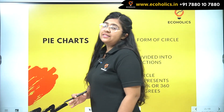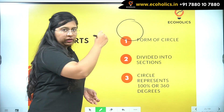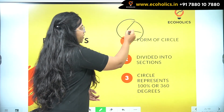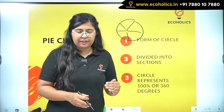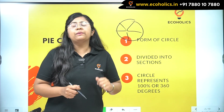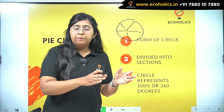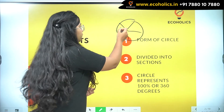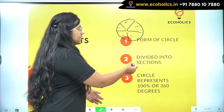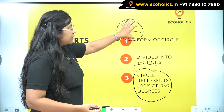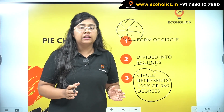When we talk about pie charts, the basic concept is a circle divided into sections. For example, it could represent the sales of different departments, revenue earned by different departments of a company, or GDP growth of different states. You've seen these pie charts that look like a pizza with different slices. The circle represents 100 percent, which is also 360 degrees.